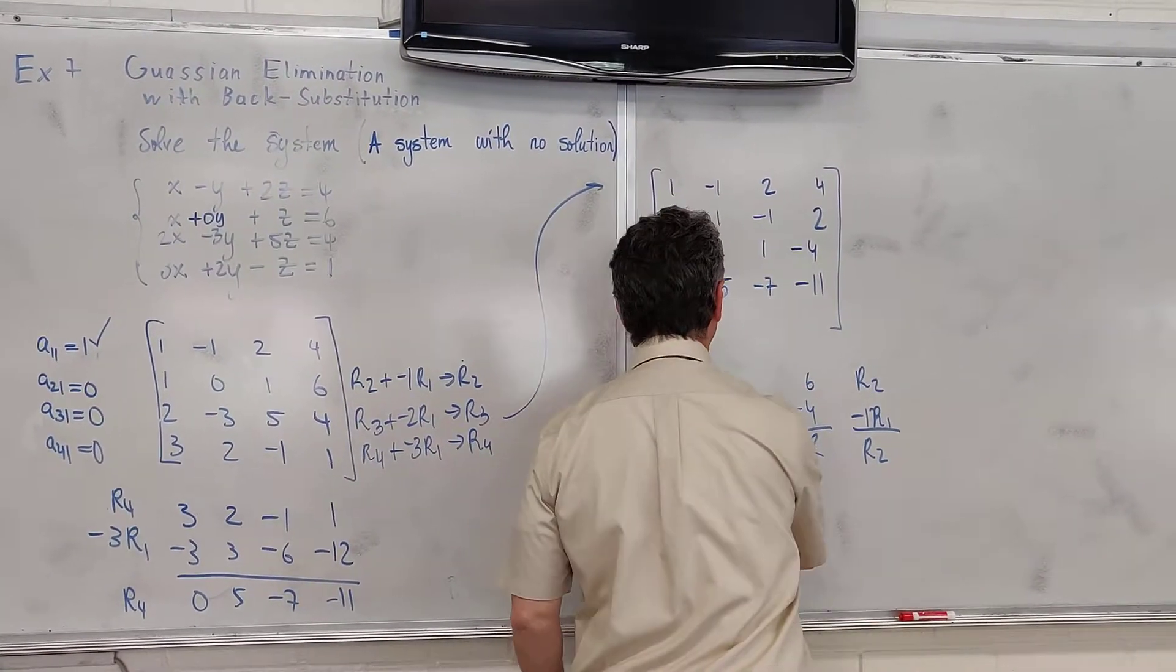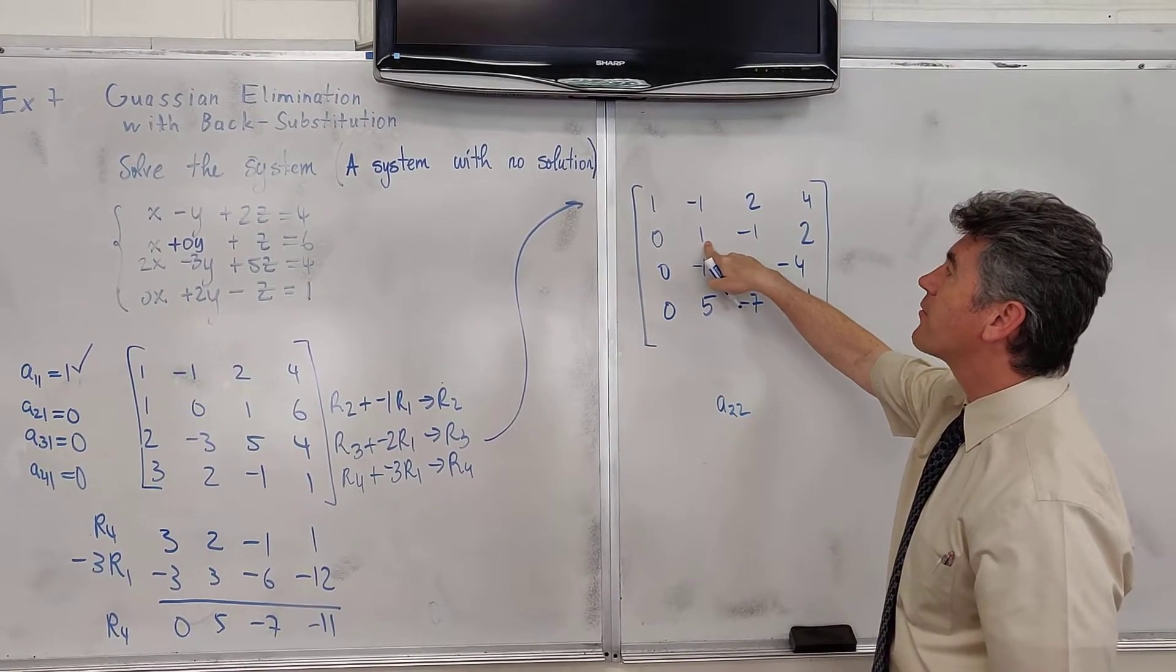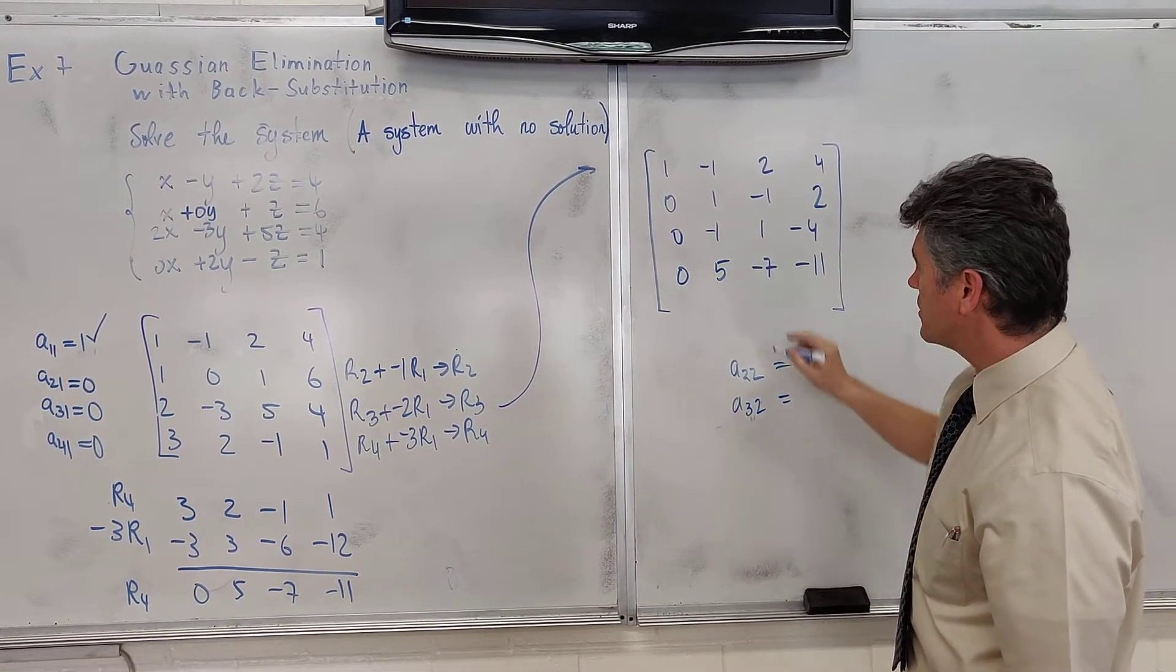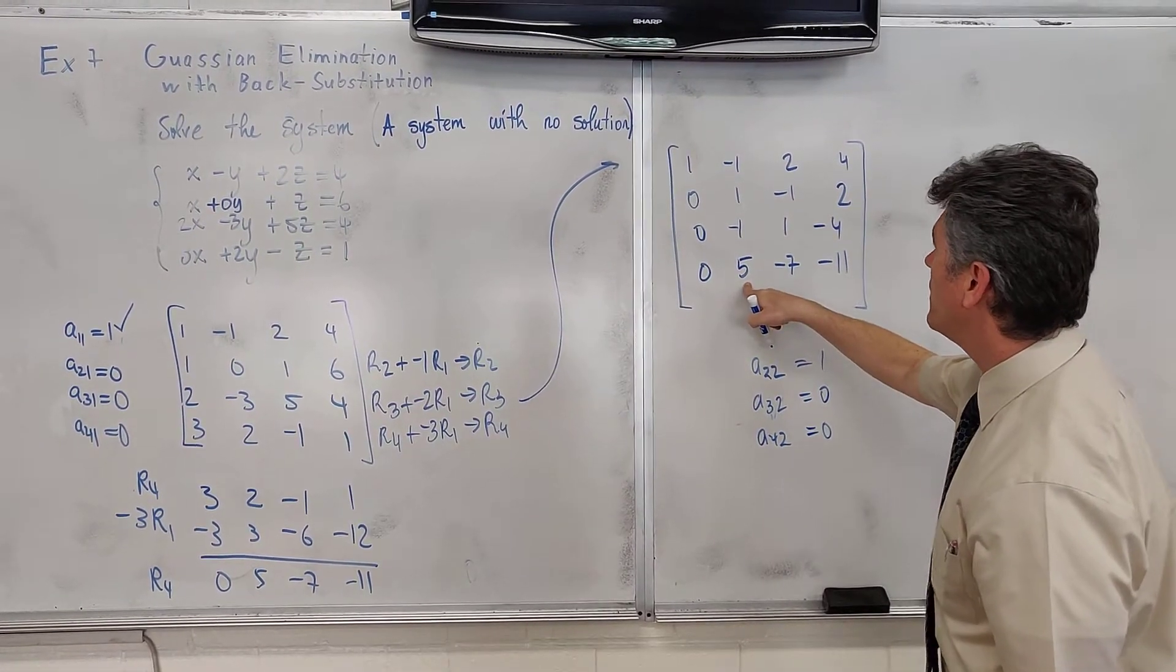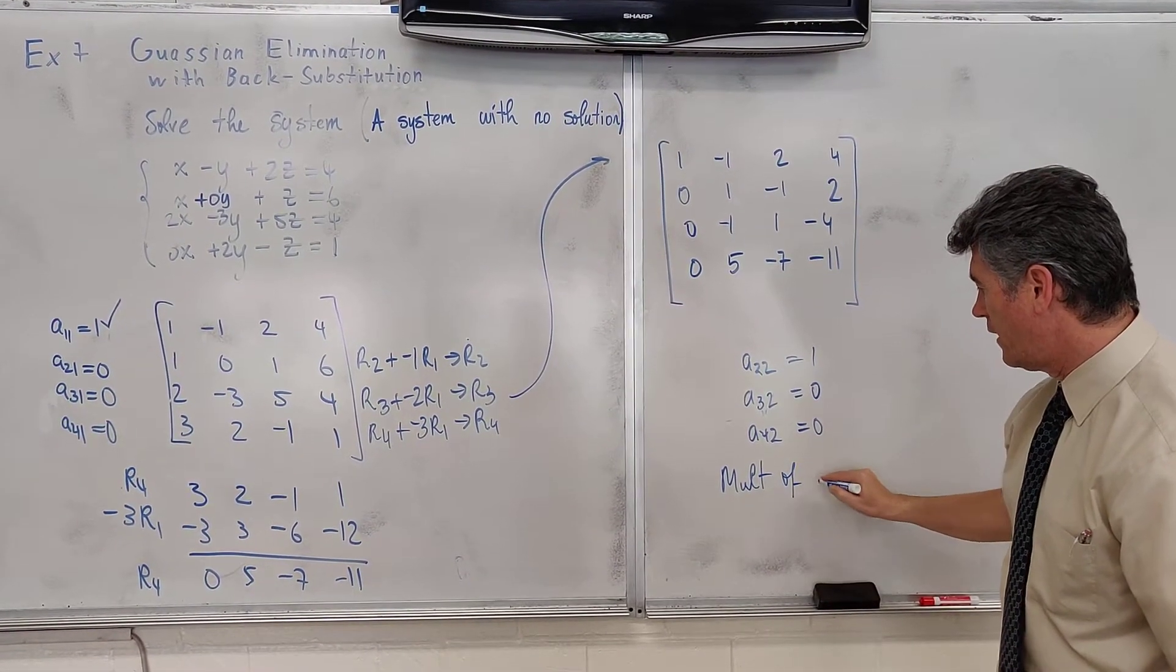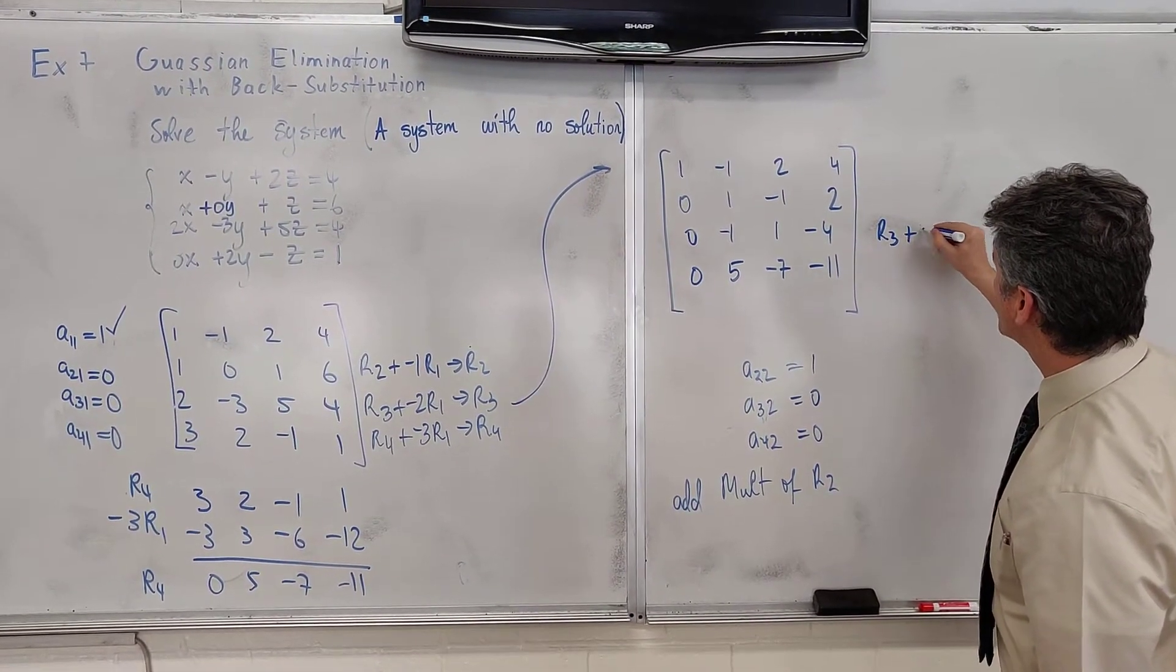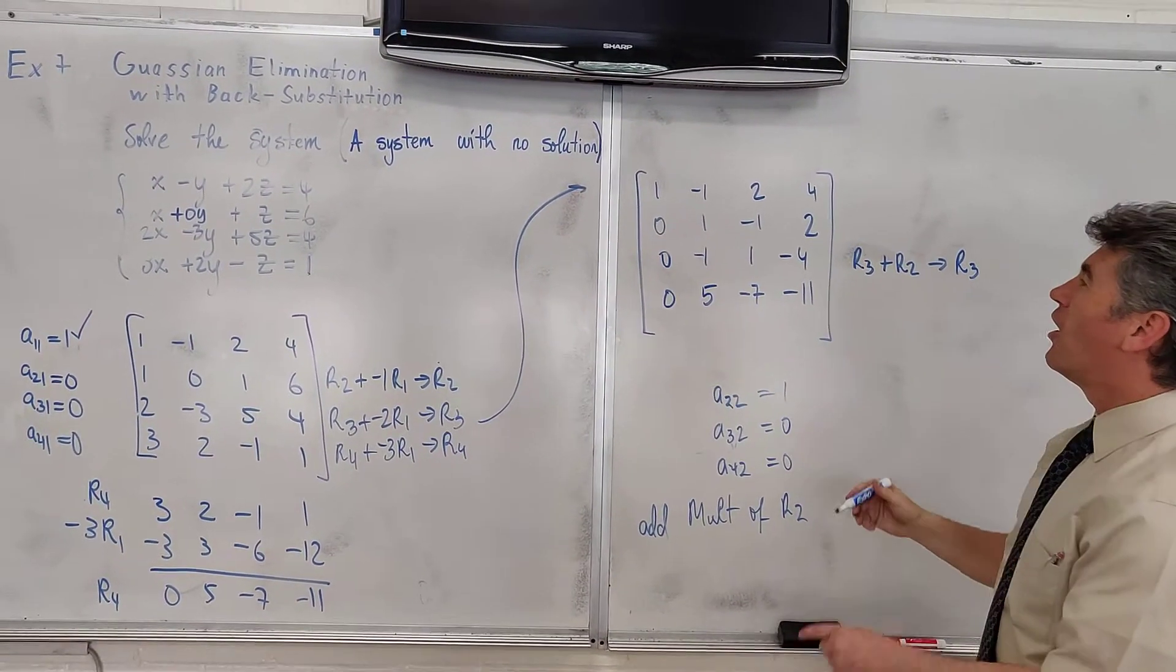So, first goal achieved. Let's see what we want next. We want the entry in the 2nd row, 2nd column to be equal to 1. And we want the entry in the 3rd row, 2nd column to be equal to 0. And the entry in the 4th row, 2nd column to be equal to 0. To do so, we are only going to use multiples of row 2. So here we go. Row 3 plus row 2 is the new row 3. And I only want to do 1 at a time.